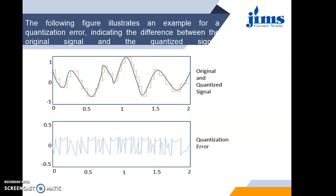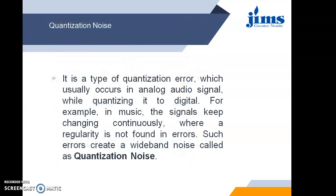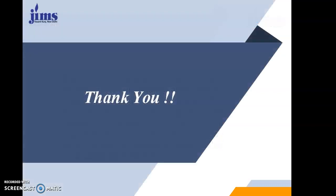These are the original and quantized signals and the next graph is showing the quantization error. It is a type of quantization error which usually occurs in analog audio signal while quantizing it into digital. Quantization error is the most common type of error which occurs while quantizing an analog signal. For example in music, the signals keep changing continuously where regularity is not found in errors. Such errors create a wideband noise called quantization noise. This is the most simple kind of noise while converting analog signal into digital in the process of quantization.